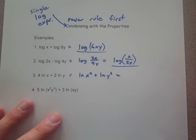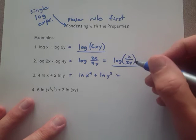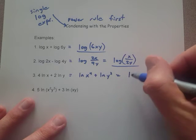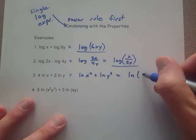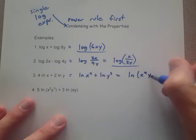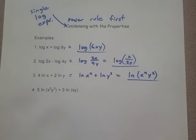Then we can use the product rule, combine those together, and so that will be ln of x to the 4th y squared, and that would be our final result for this one. Okay, so there's number 3.